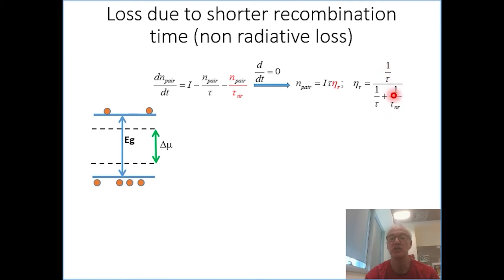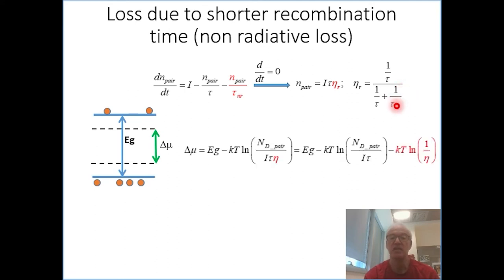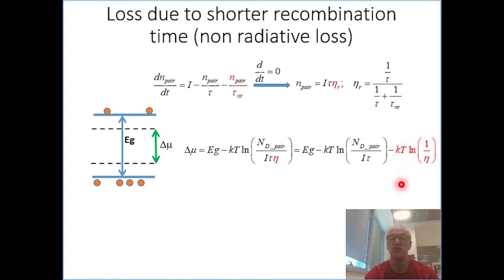The radiative quantum efficiency approaches one when the non-radiative rate goes to zero, or when the non-radiative lifetime tau goes to infinity. And indeed, if you want to see how much you lose when the device is not so efficient, this is the term that states the amount of voltage loss.